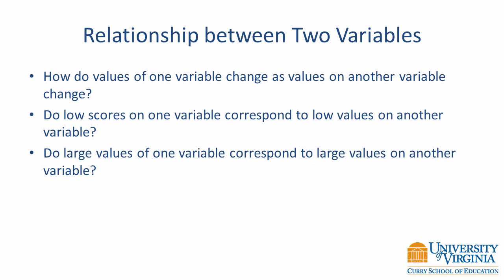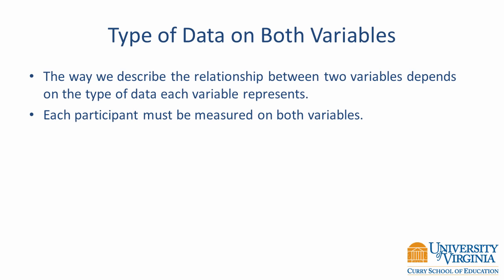In exploratory data analysis, we often want to learn about the relationship between two variables. We may be interested in how values of one variable change as values on another variable change — do low scores on one correspond to low values on another, or do large values on one correspond to large values on another? Describing the relationship between two variables is more complicated because you must consider the type of data in both variables. A necessary condition is that each participant must have values for both variables; if a participant is missing values on one or both, they cannot be included in the analysis.